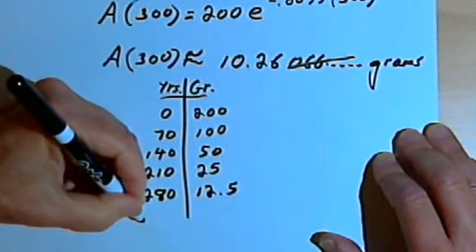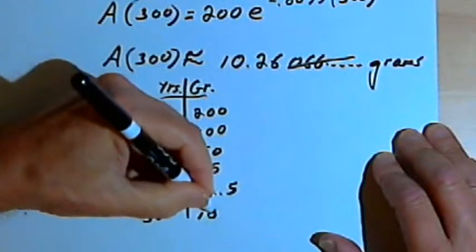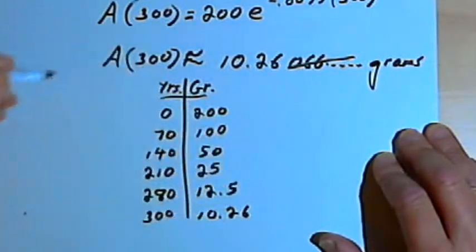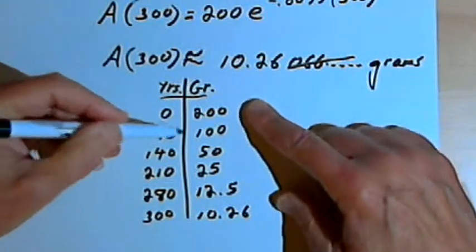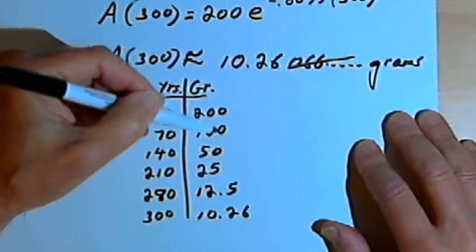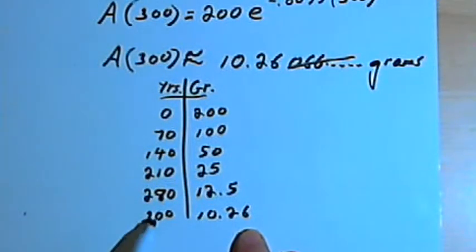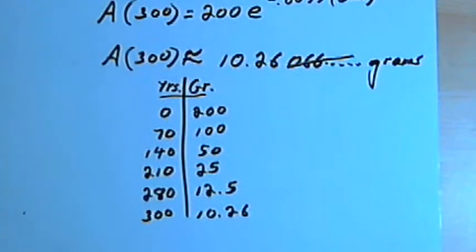And our answer said that after 300 years, we had 10.26 grams. So looking at the table and the way the weight, the number of grams, is deteriorating, it seems like it would be reasonable to assume that after 300 years, we would in fact have 10.26 grams. So I hope that helps. Take care. I'll see you next time.